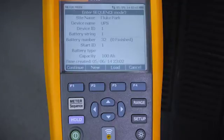We've created a sequence name for this site, which is Fluke Park. Our device name is UPS. For the purpose of this demonstration, we'll assume we have 32 batteries in this string, supplying power to the UPS.